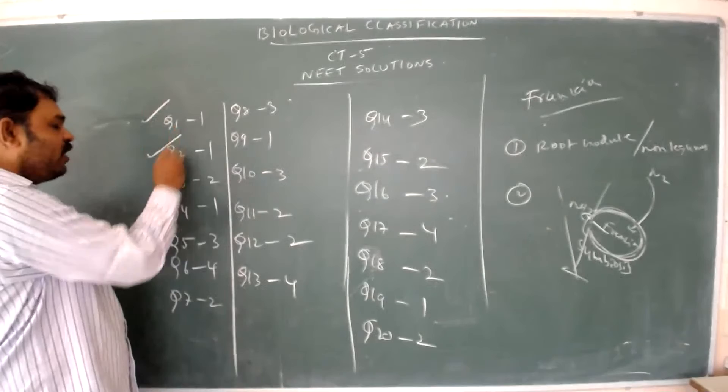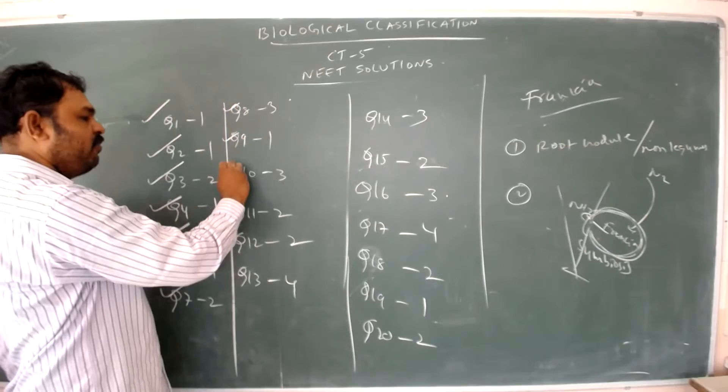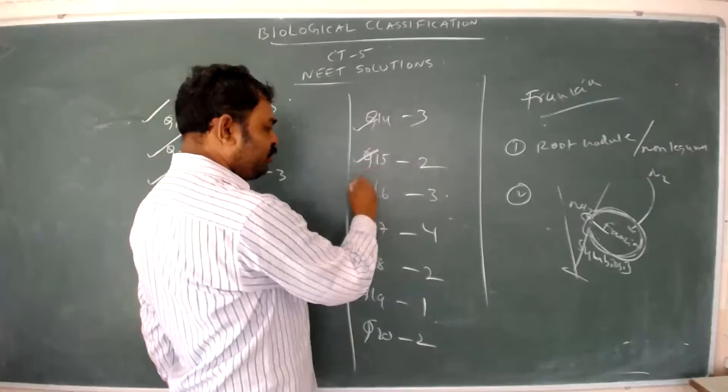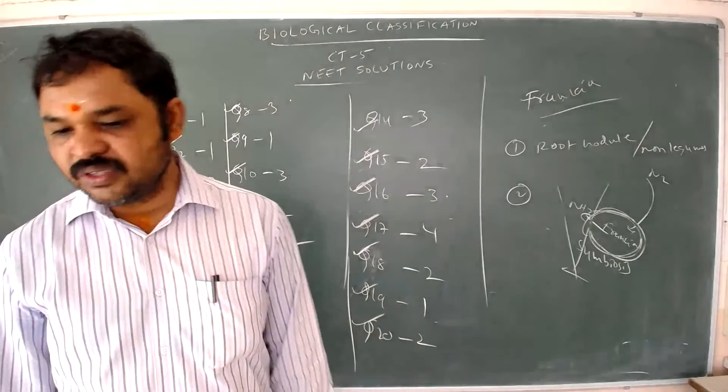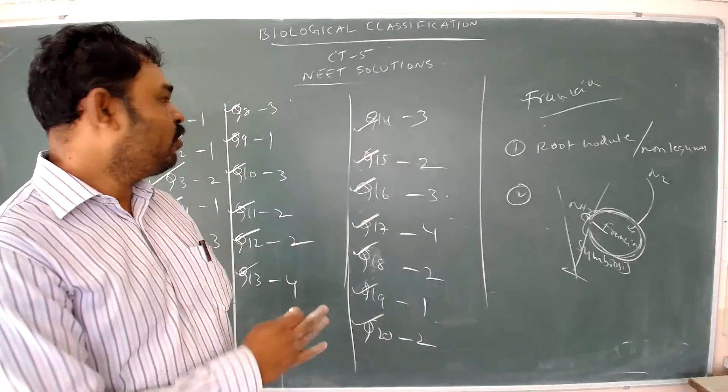Summary of all answers: Q1=1, Q2=1, Q3=2, Q4=1, Q5=3, Q6=4, Q7=2 (wait, Q7=2), Q8=3, Q9=1, Q10=3, Q11=2 (actually option listed as 4 by teacher, let me follow transcript), Q12=4 (per transcript), Q14=3, Q15=2, Q16=3, Q17=4, Q18=2, Q19=1, Q20=2.